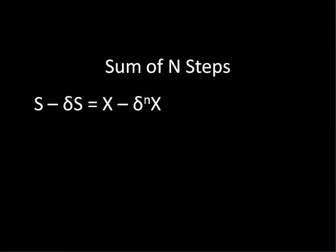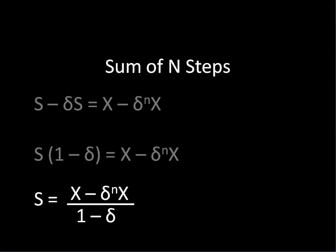We want to solve for s here, so we have to pull it out from the one minus discount on the left side. And then we just divide both sides of the equation by one minus discount. And we get that the sum of n steps equals x minus discount to the n times x all over one minus discount.